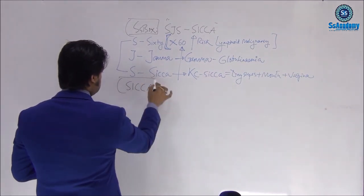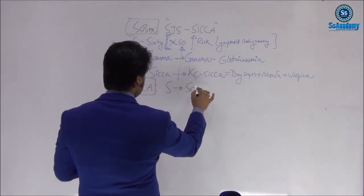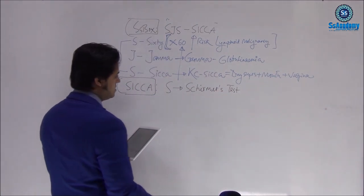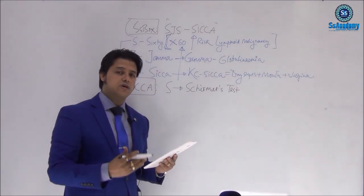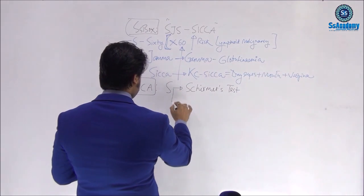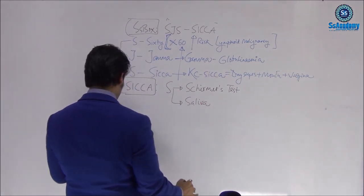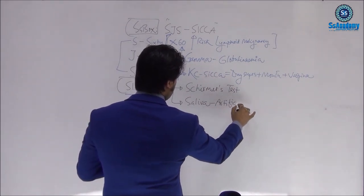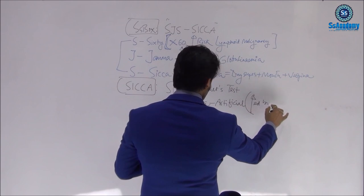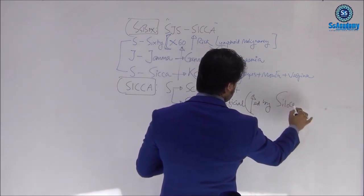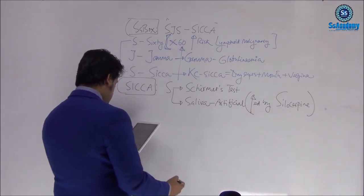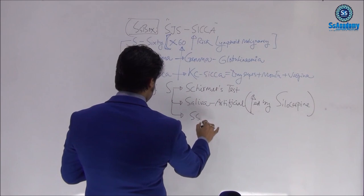Now breaking down CICA further: S stands for Schirmer's test — a clinical bedside test assessing the extent of dryness. The next S is for saliva — treating patients with artificial saliva, which is stimulated by pilocarpine (silocarpine). The following S is for SSA antibodies — the anti-Ro antibody — and SSB, the anti-La antibody.